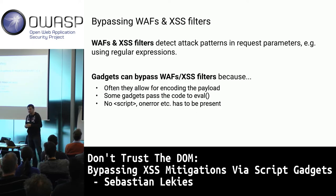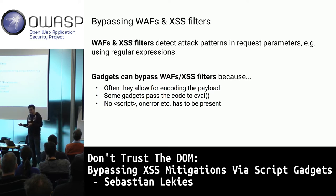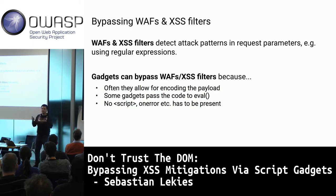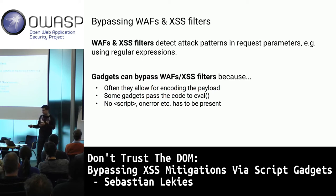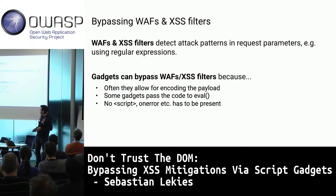Let's start with the simplest: WAFs and XSS filters. They use rules or regular expressions to detect payloads. When looking for gadgets that bypass them, we look for legitimate pieces of code that get upgraded by a library — for example, where a legitimate attribute is passed to eval, or where a text node is passed to innerHTML.